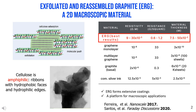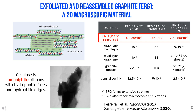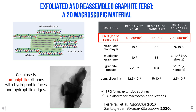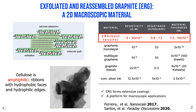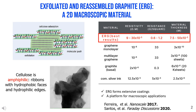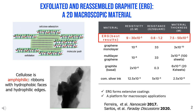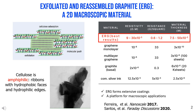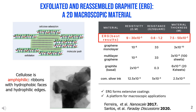Thus, cellulose is an effective exfoliant and water dispersant for graphite, producing water dispersions that dry on many surfaces, forming highly conductive films. ERG film resistivity is higher than graphite and much higher than graphene, but the cohesive films with thousands of lamellae show low surface resistance.